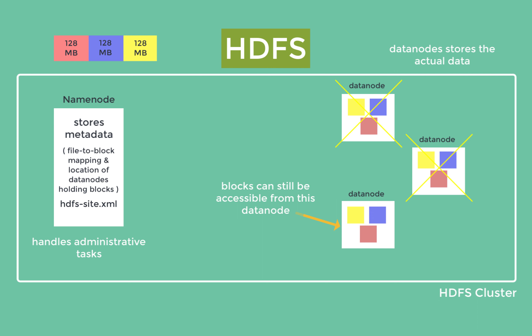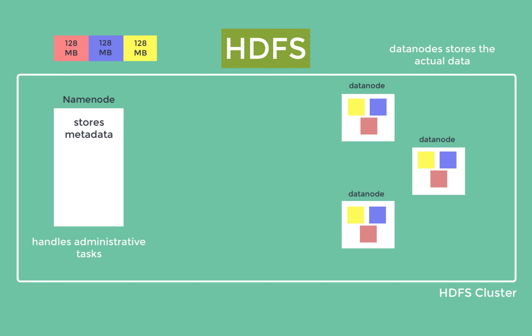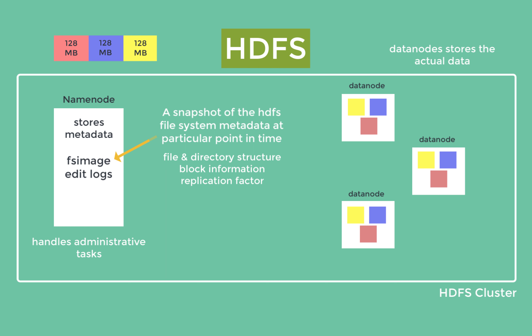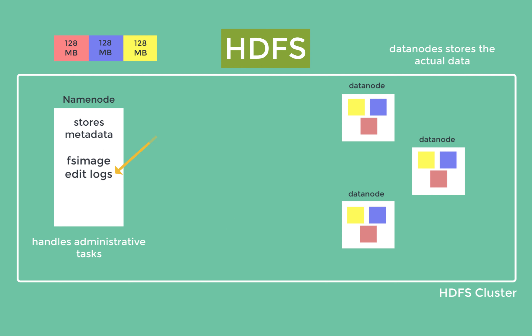Metadata related to files, blocks, and folders stored in HDFS is kept in the NameNode. The NameNode maintains this information in two main files: the fsimage and edit logs. The fsimage is a file that represents a snapshot of the HDFS file system's metadata at a particular point in time. It contains all information about file and directory structures, block information, replication factor, and other essential metadata. The fsimage is static and read-only, and is created or updated only during specific events such as NameNode restart, cluster startup, or explicit operations like checkpointing.